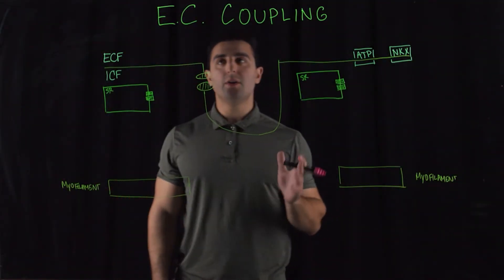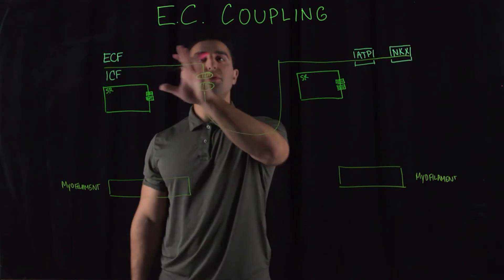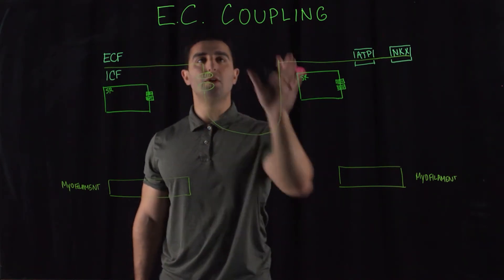So now we're going to focus on how cardiac muscles contract. This happens through a specific mechanism called EC coupling.